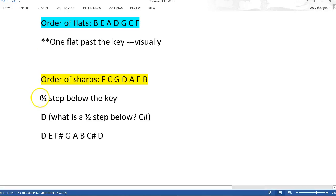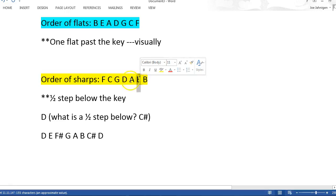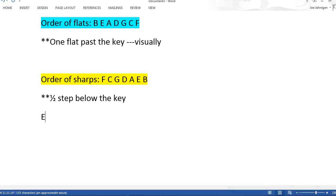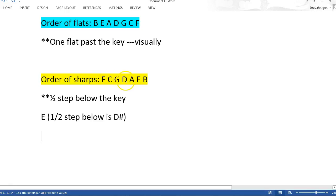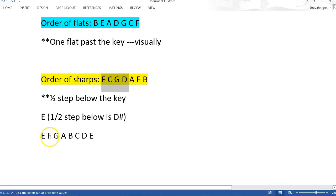Similar to above, you're going to go a half step below the key. So if we wanted the key of E, a half step below E is D-sharp. So it's going to be all of those sharps. Key of E — half step below is D-sharp — so you're going to use F, C, G, and D, all of those notes. Going E, F, G, A, B, C, D, E and inserting: F-sharp, G-sharp, C-sharp, D-sharp. There's your E major scale.